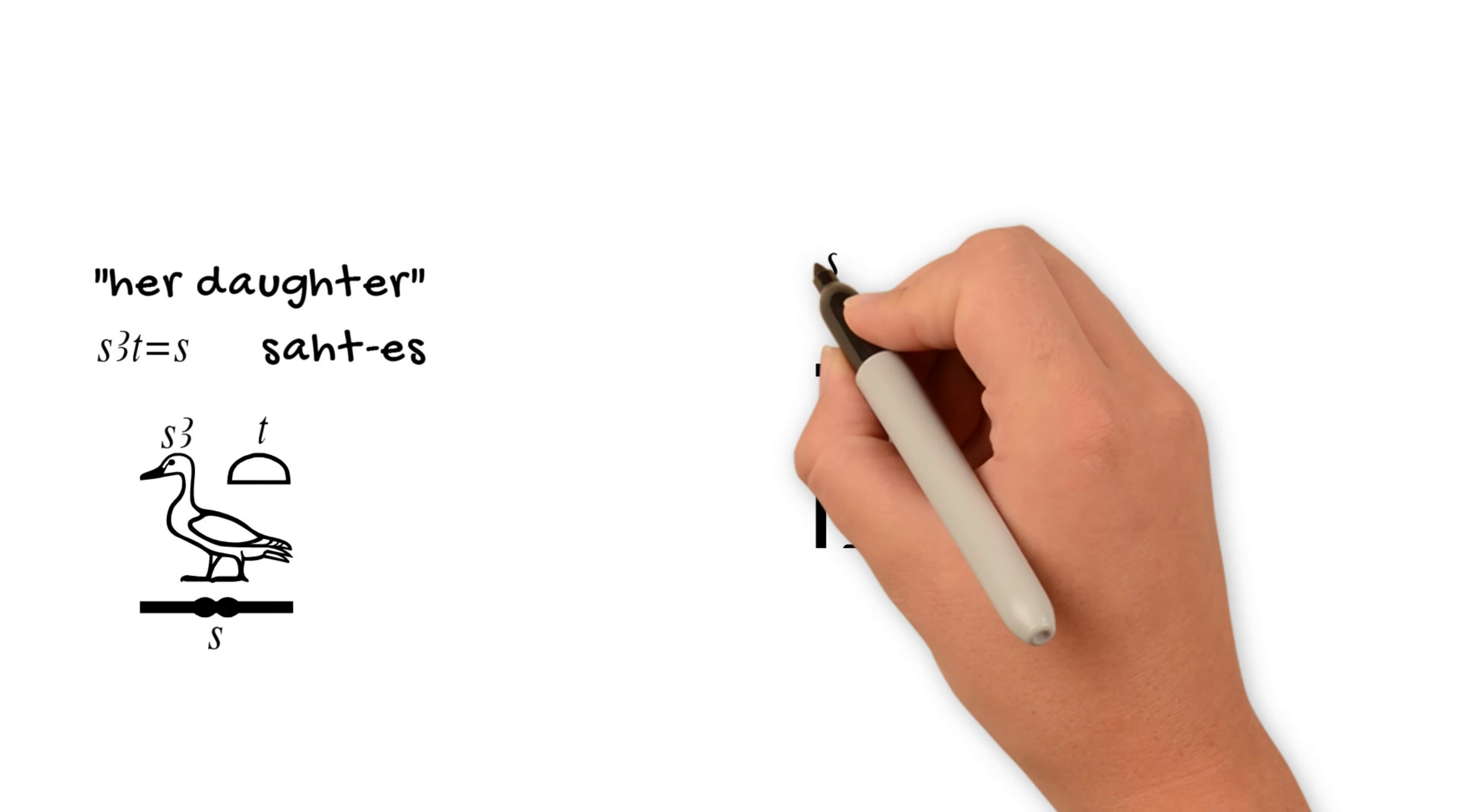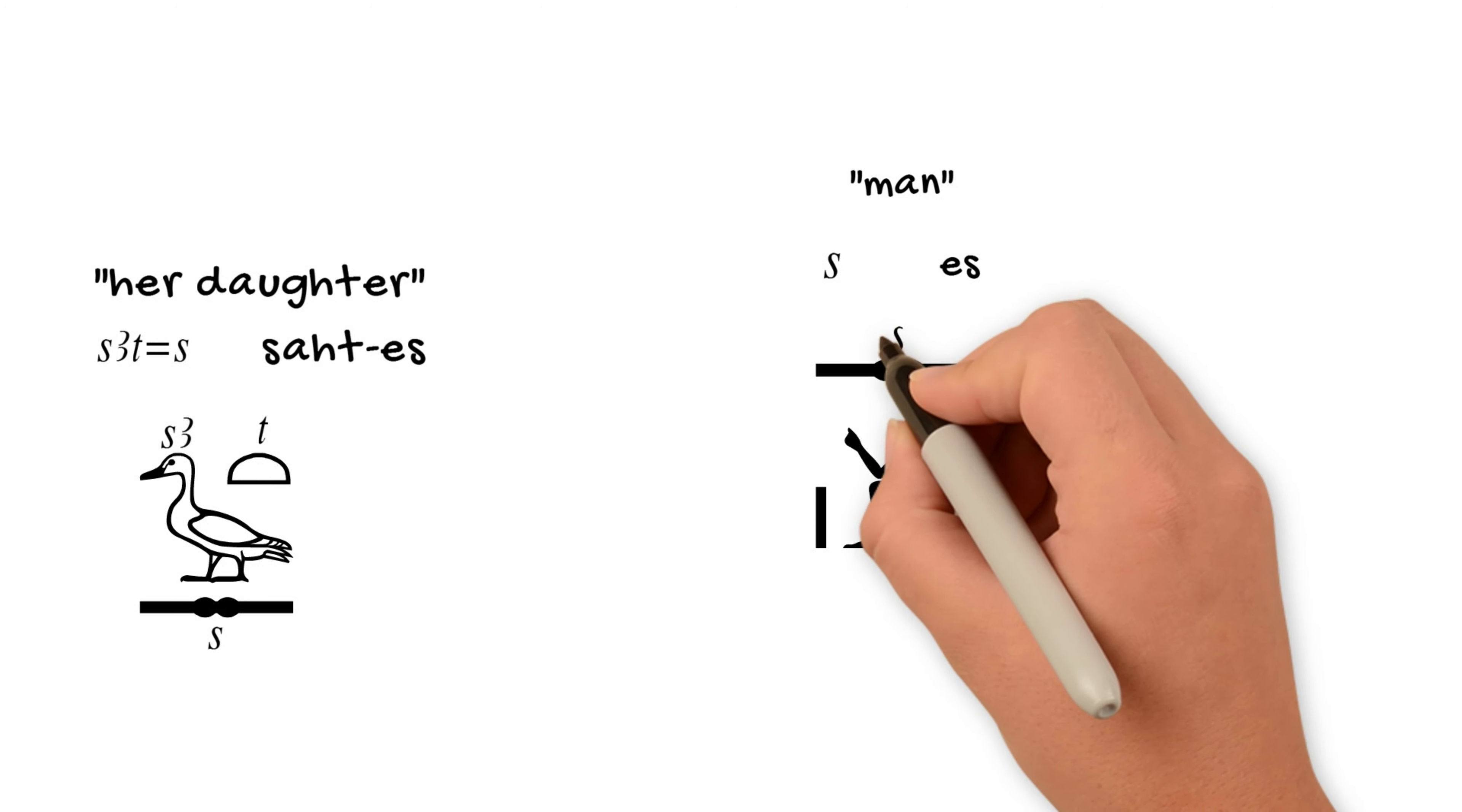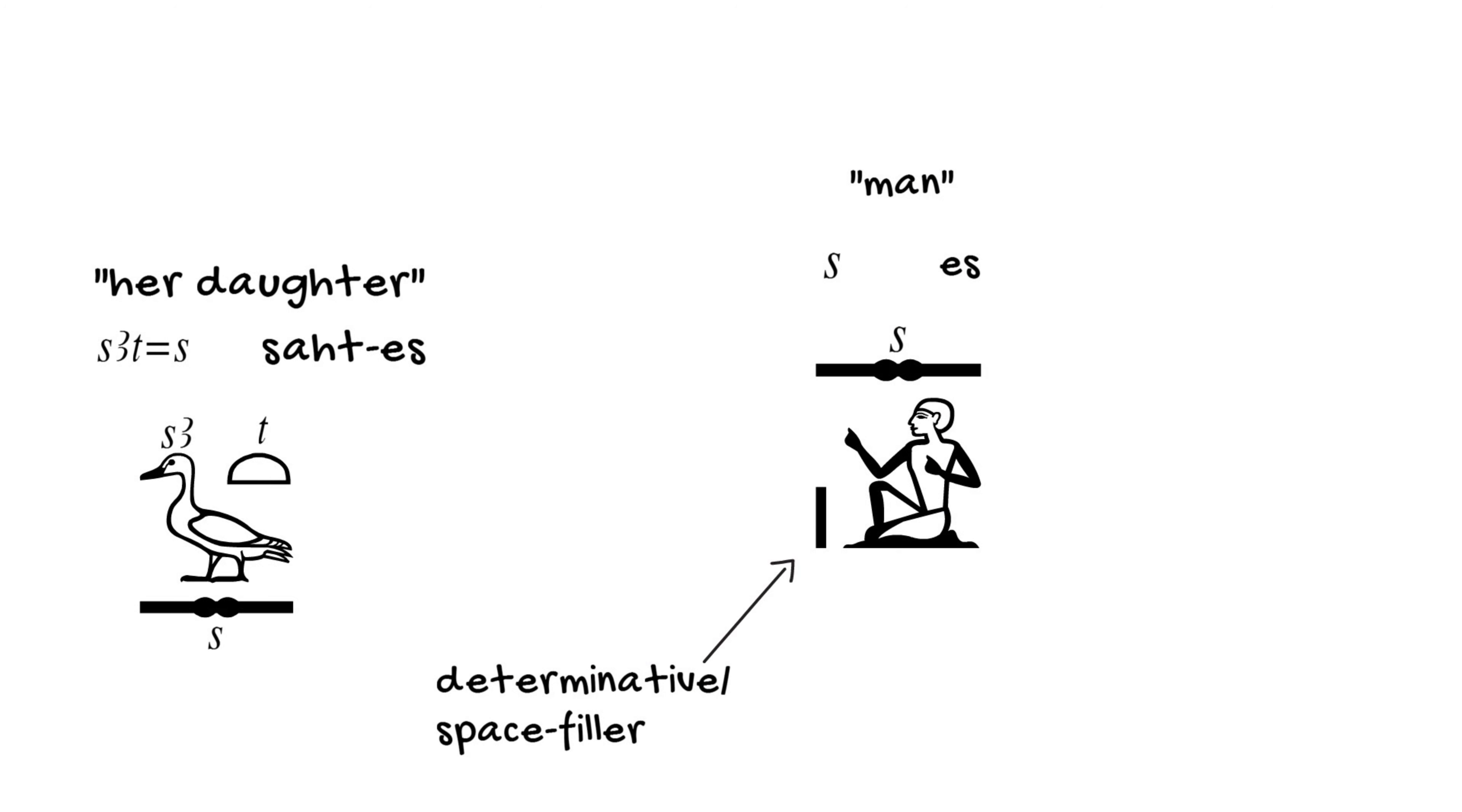and a little dash, and a seated man, usually. The seated man, of course, I talked about in the previous video, and I will link it up here in the corner. That is a determinative,